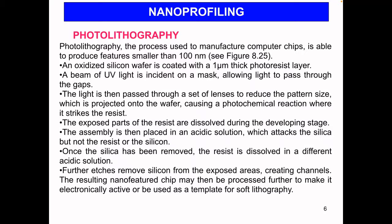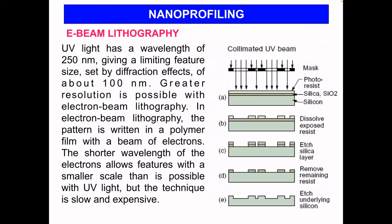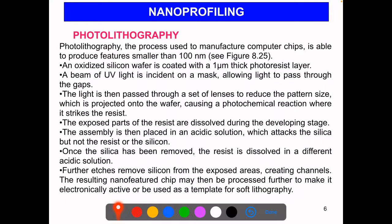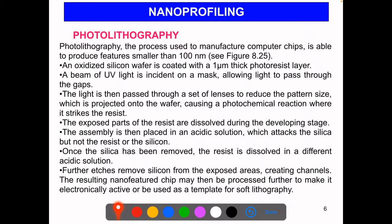In photolithography, an oxidized silicon wafer is coated by a photoresist layer. First, the silicon must be carefully cleaned and free of dust or trace contaminants. Then the silicon wafer is treated with the photoresist. Photolithography and all lithographic actions happen in clean rooms. A beam of UV light is incident on a mask, allowing light to pass through the gaps. The light passes through a set of lenses to reduce the pattern size, which is projected onto the wafer, causing a photochemical reaction where it strikes the resist. The exposed parts of the resist are dissolved during the developing stage. The assembly is then placed in an acidic solution which attacks the silica but not the resist or the silicon, and once the silica is removed, the resist is dissolved in a different acidic solution.